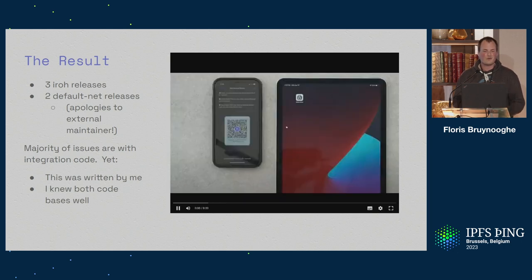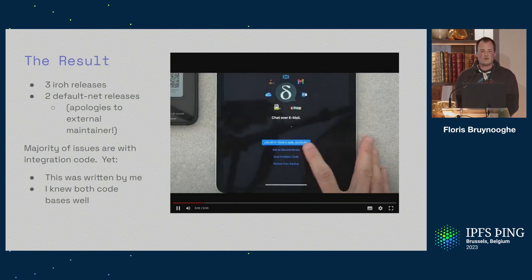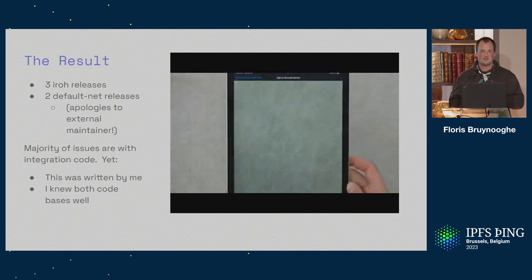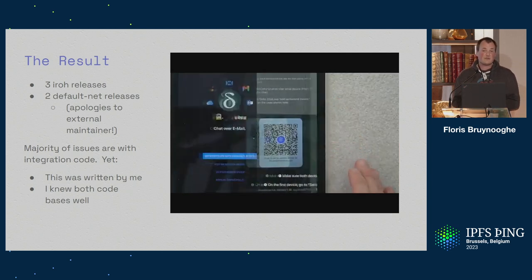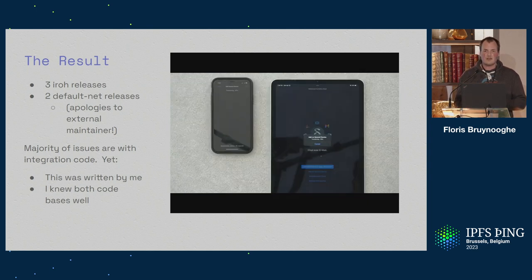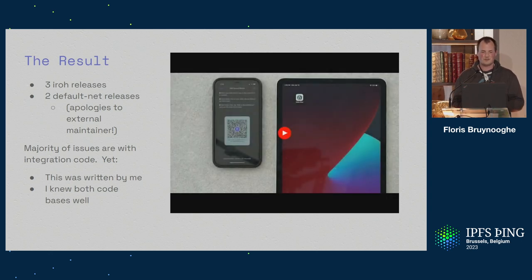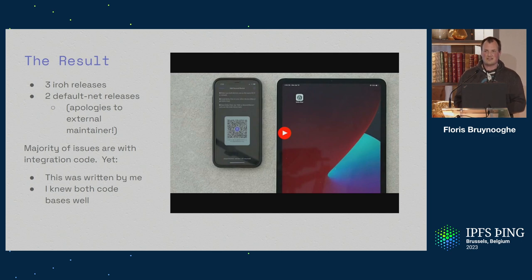Before we actually managed to make this work, we were three IRO releases further, and had to ask for two releases from some upstreams as well. But eventually it worked. The interesting thing was that most bugs were actually in the integration code — IRO itself, apart from where we were completely blind to not providing enough features, was actually all right. Even though the integration code was mostly to blame, and this was done by me and I knew both projects very well, it was still a remarkably large number of errors to get it right entirely.